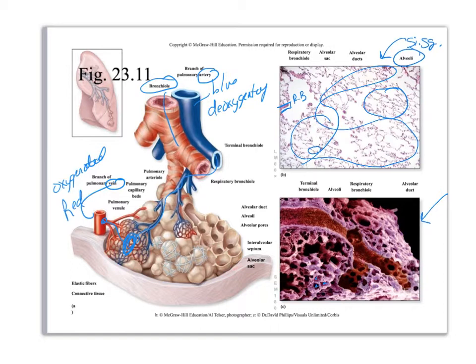Let's go back to the alveolus right here. Notice that each one of these balls is going to be wrapped in a capillary bed, but it's also wrapped in elastic connective tissue — elastic fibers — so that when you breathe and these expand, those elastic fibers will help it recoil back to its normal shape. You have both capillary and elastic fibers around every single alveolus.